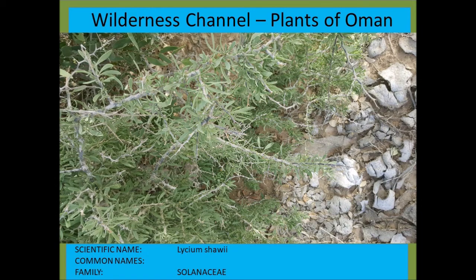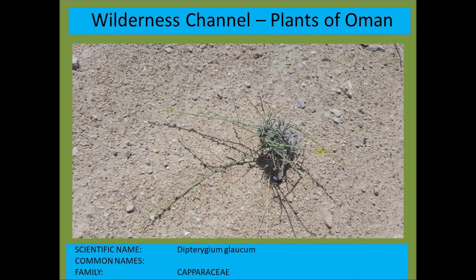Lycium shawii — one of the honey thorns or honey bushes — has a lot of thorns and forms fairly small bushes in the area. Dipterygium glaucum — often mistaken with Crotalaria aegyptiaca.